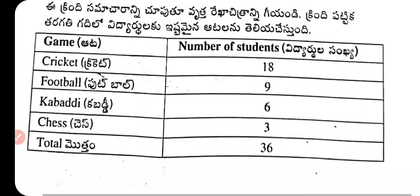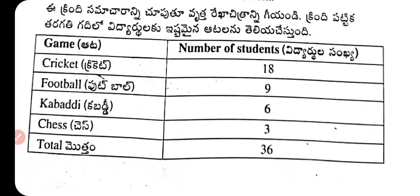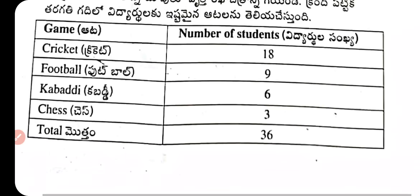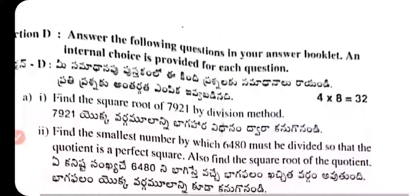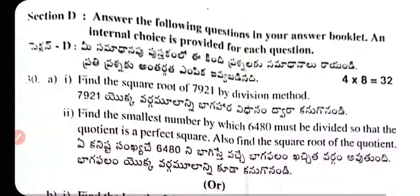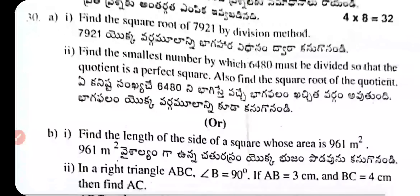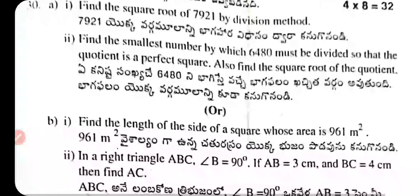Question 28 (continued) / Question 29: Draw a pie chart showing the following information about favourite games in a classroom — Cricket: 18, Football: 9, Kabaddi: 6, Chess: 3, Total: 36. Question 30: Find the square root of 7921 by the division method. Find the smallest number by which 6400 must be divided so that the quotient is a perfect square, and also find the square root of the quotient.